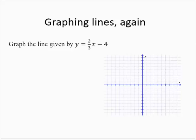Here we are asked to graph the line given by y equals two-thirds x minus 4. We learned how to graph this using a table already, but now let's graph it just by understanding the form of the equation.